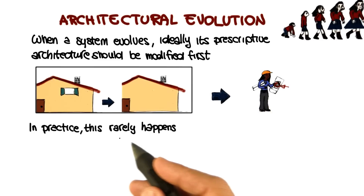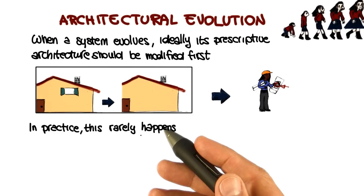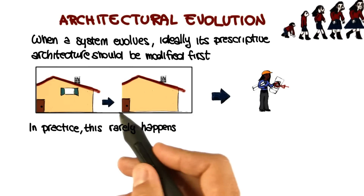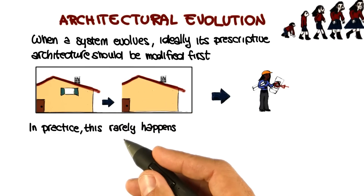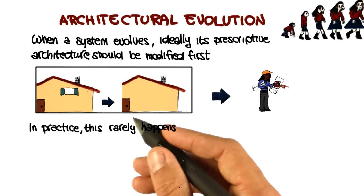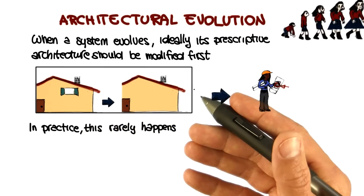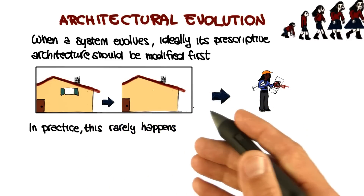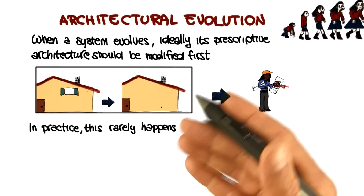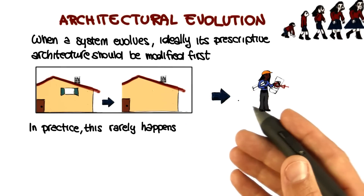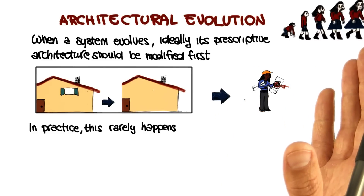In software, unfortunately, this rarely happens in practice. In practice, the system and therefore its descriptive architecture are often directly modified, like in this case that I'm showing here. So what happens is that the architecture as conceived does not change, whereas the architecture as implemented does change, and therefore these two things start diverging.